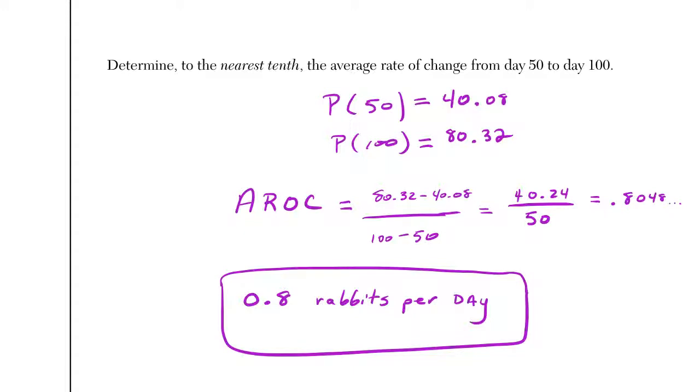Obviously, slope we know is our delta Y over delta X. I know my change in X right away. That they gave me. The change there is obviously 50. The change in the values I just found is 40.24. They wanted it to the nearest tenth, so be careful here. Average rate of change, 0.8 rabbits per day.